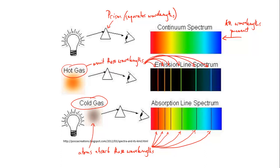And the key thing is that for a given element, the black lines in the absorption spectrum and the bright lines in the emission spectrum are at exactly the same wavelengths, as you can see by looking at the two spectra here.